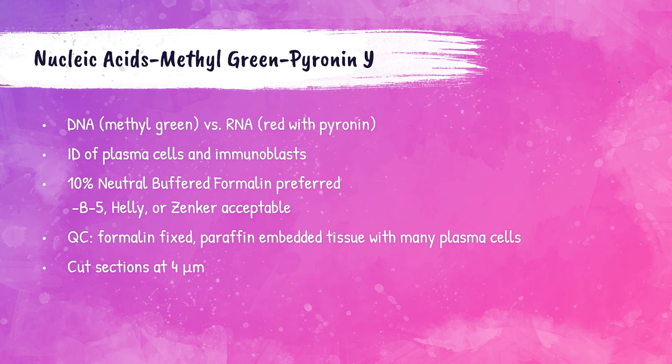The methyl green pyronin Y method is used to differentiate between a cell's DNA and RNA, and is most commonly used to identify plasma cells and immunoblasts in tissue samples. The preferred fixative is 10% neutral buffered formalin, although B5, Helly's, or Zenker's fixatives are acceptable. This stain requires quality control — the QC section should be paraffin-embedded tissue containing many plasma cells fixed in formalin. Tissue sections should be cut to 4 microns.